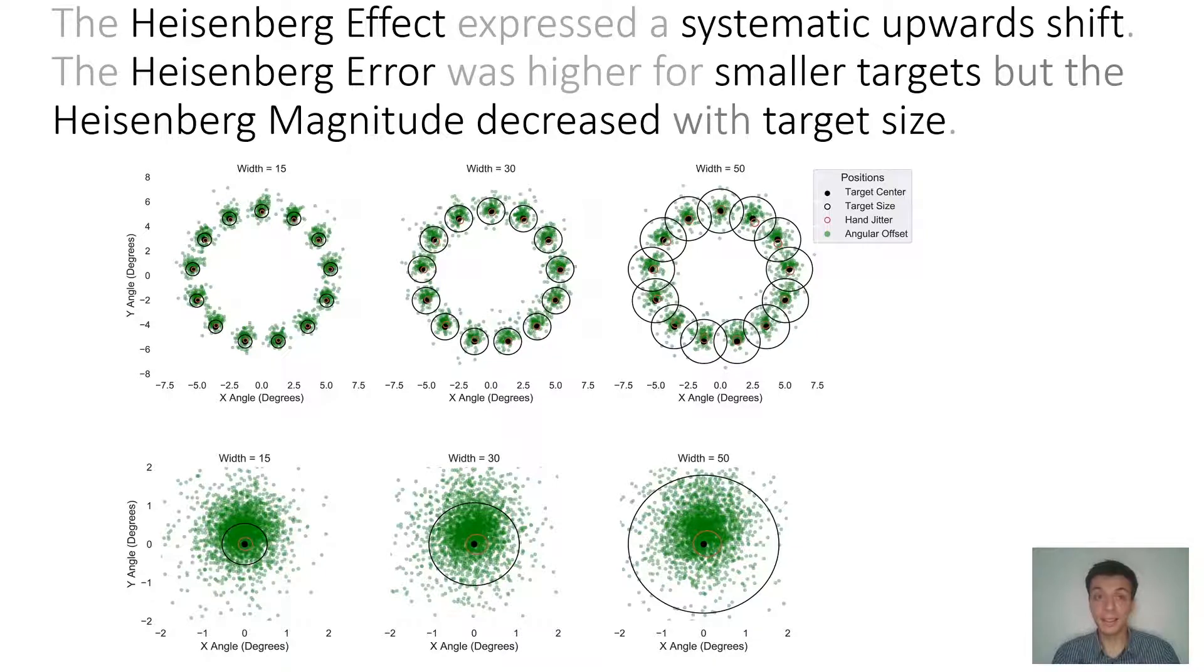What we found is that the Heisenberg effect expressed a systematic upwards shift. The direction of this shift could be due to the button position that we used. The Vive controller has a trigger button on the bottom, meaning that another position of the trigger or another button could lead to another direction. This has to be explored in the future.